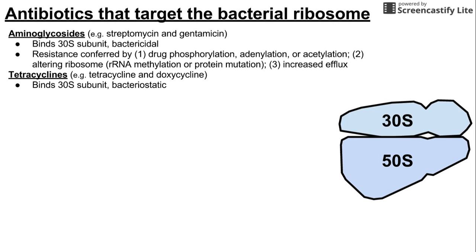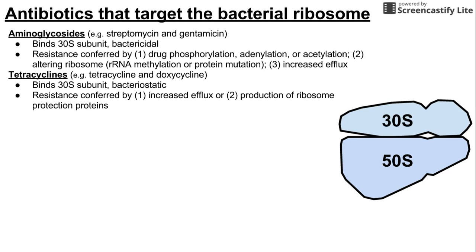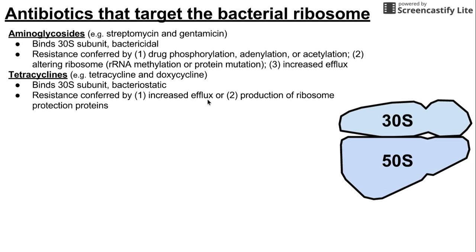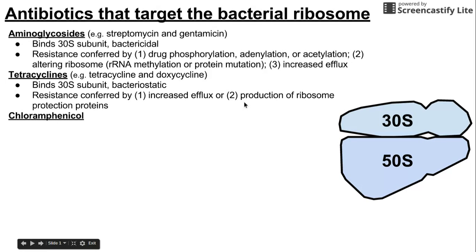Resistance to tetracyclines can be achieved by increasing efflux — pumping more antibiotic out of the bacterial cell — or by production of ribosome protection proteins, which prevent the mechanism of action of tetracycline.